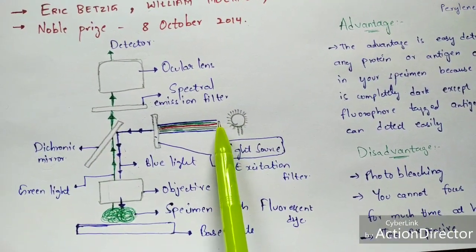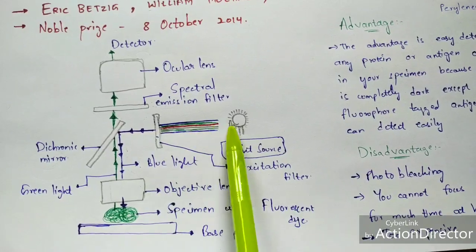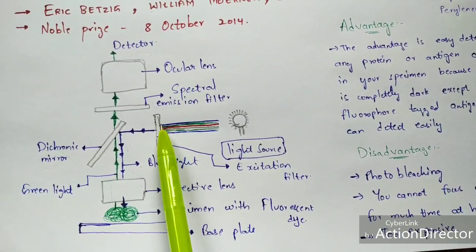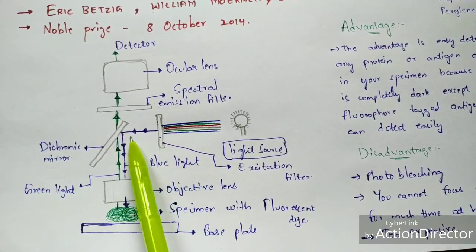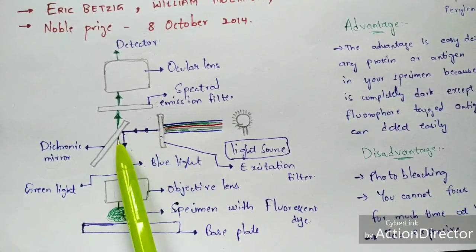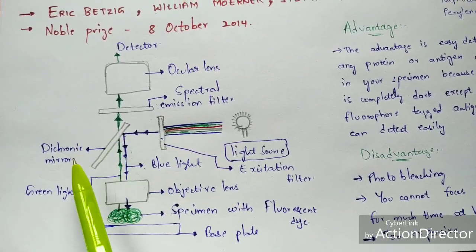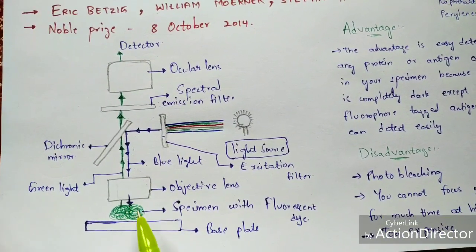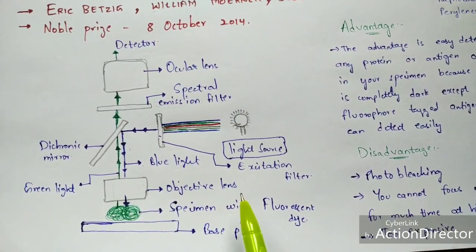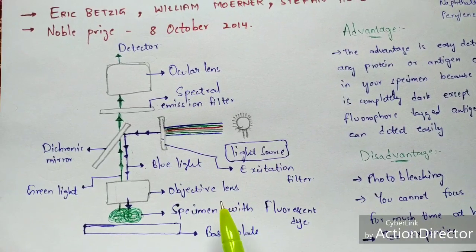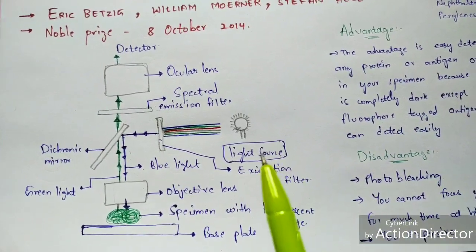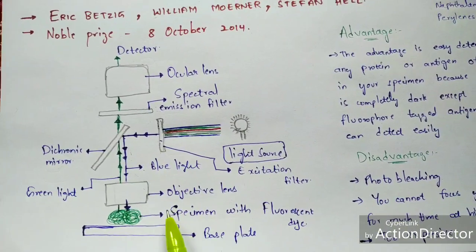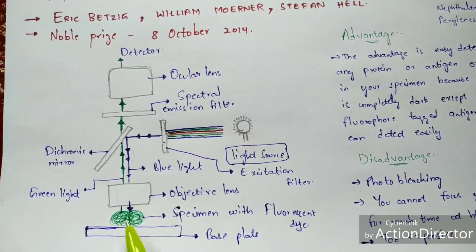To summarize the mechanism: light from the light source falls on the excitation filter, which emits only blue color light. The dichroic mirror reflects this blue light onto the objective lens, which directs it to the specimen. The specimen is mixed with fluorescent dye, which is majorly green in color — though some fluorescent dyes can also be red or brown in color.